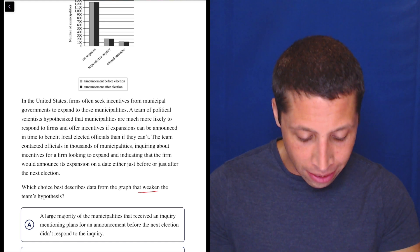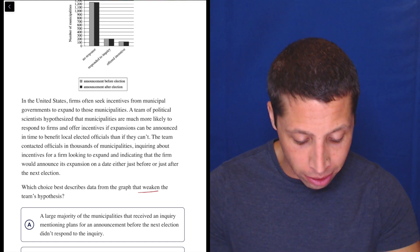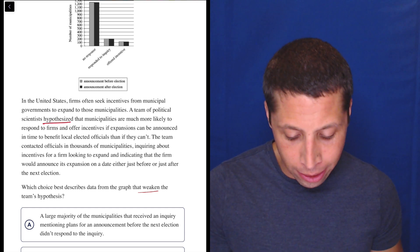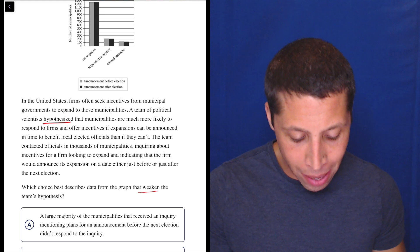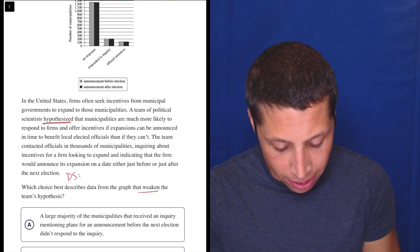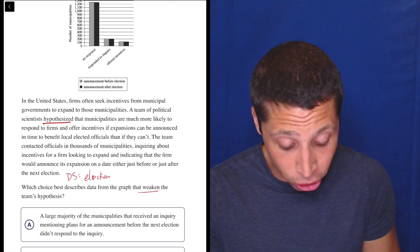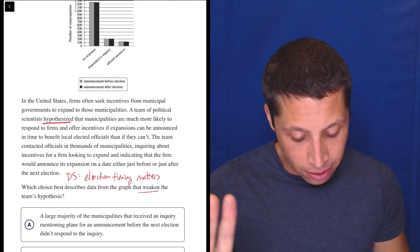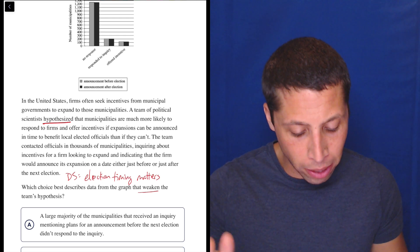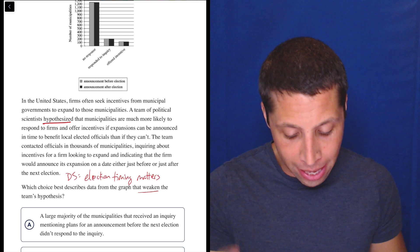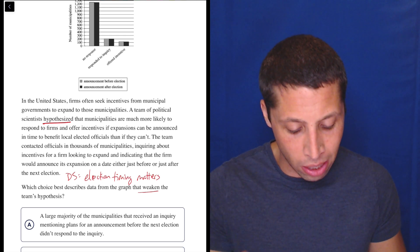In the United States, firms often seek incentives from municipal governments to expand to those municipalities. A team of political scientists hypothesized that municipalities are much more likely to respond to firms and offer incentives if expansions can be announced in time to benefit local elected officials than if they can't. So dumb summary. What is that saying? That's saying elections, election timing matters. Let's just read that again. Let's make sure.